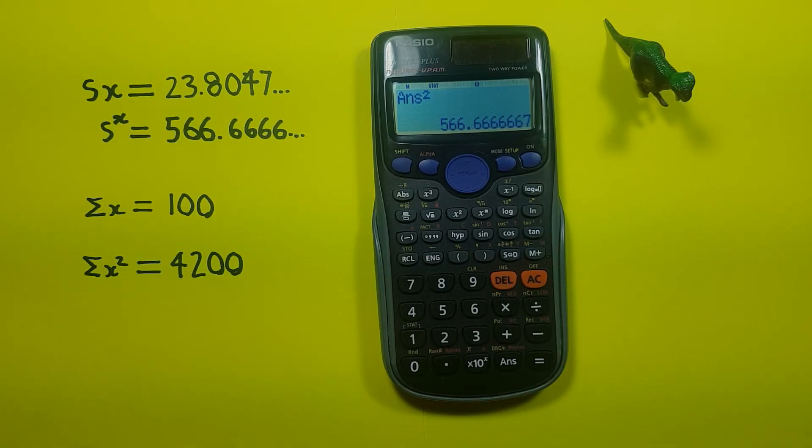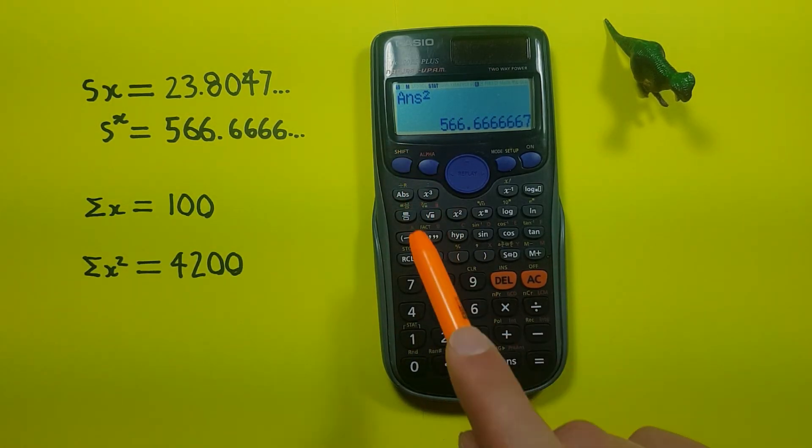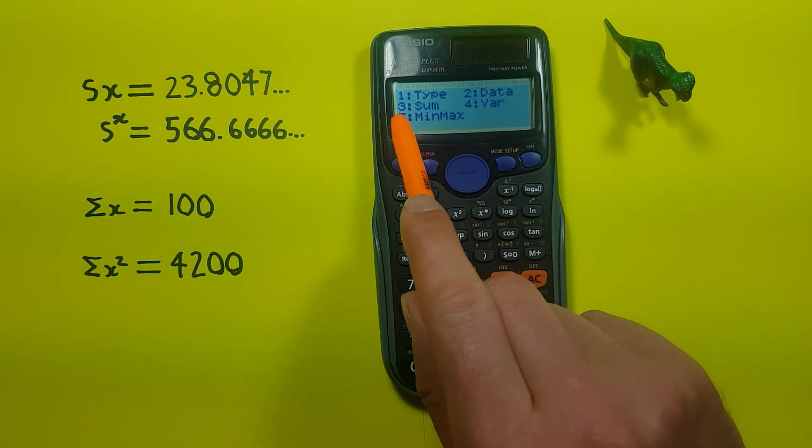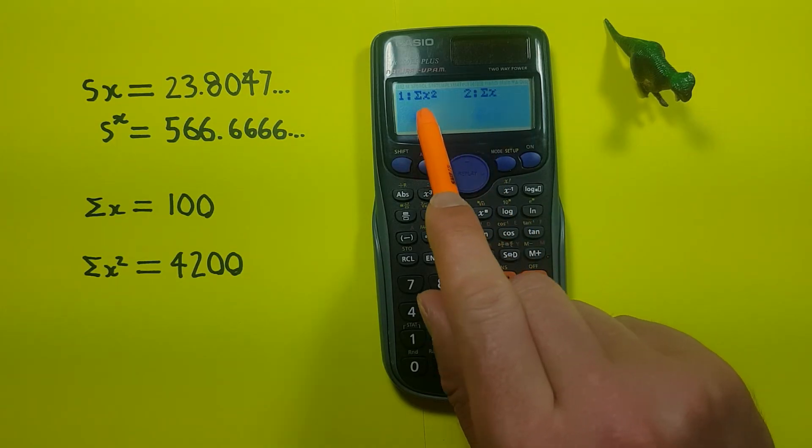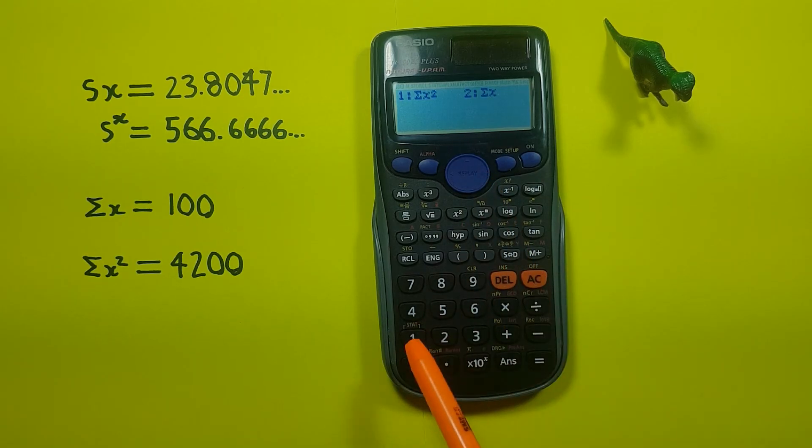If we go back into our stats, we can get our sums by choosing number 3. There we go. We can choose either 1 for sum of squares.